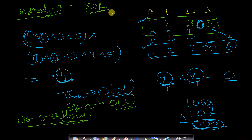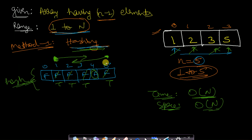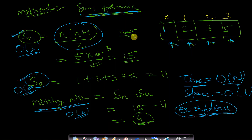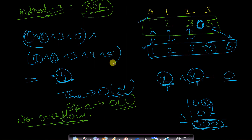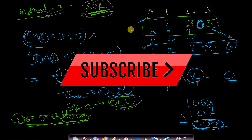In summary, we covered three methods. Method 1 using hashing is simple but uses O(n) extra space. Method 2 using the sum formula runs in O(n) time and O(1) space but can have overflow issues. Method 3 using XOR also runs in O(n) time and O(1) space while avoiding overflow — making it the best approach. I hope you understood how to find the missing number in an array. Please like, share, and subscribe for more programming videos.